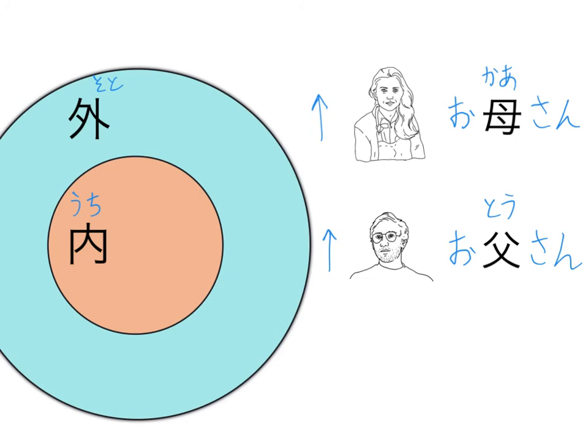This happens across all the different terminologies. There's one of these for older sister, onesan, outside, as opposed to ane, inside, uchi. Older brother, for example, oniisan, referring to someone who is soto, outside, as opposed to ani, inside.